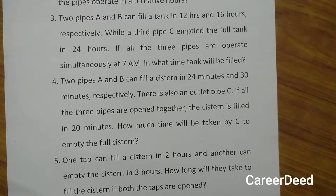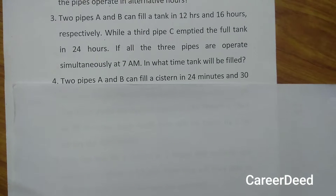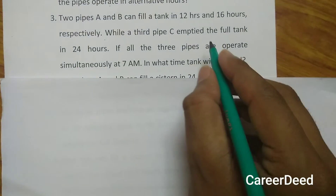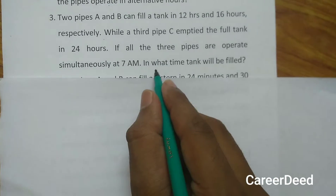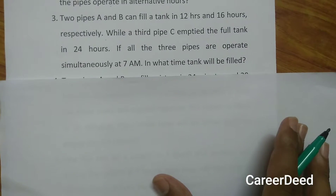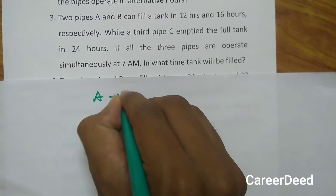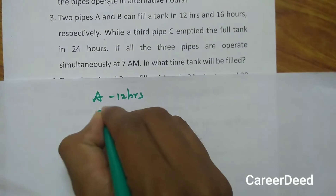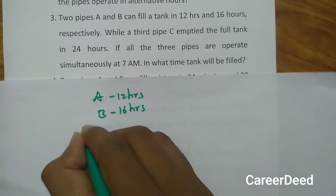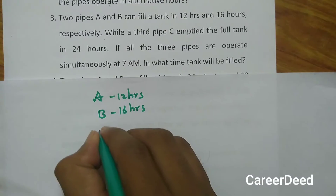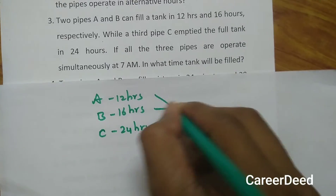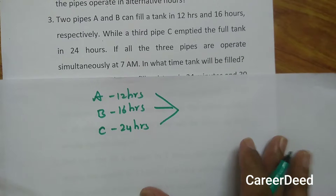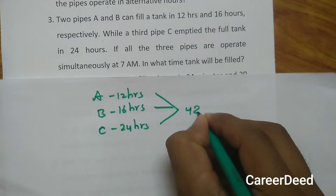In question number 3: two pipes A and B can fill a tank in 12 hours and 16 hours respectively, while a third pipe C empties the full tank in 24 hours. If all 3 pipes are operated simultaneously starting at 7 AM, at what time does the tank get filled? Take the LCM of 12, 16 and 24, which gives 48 units as the total capacity of the tank.